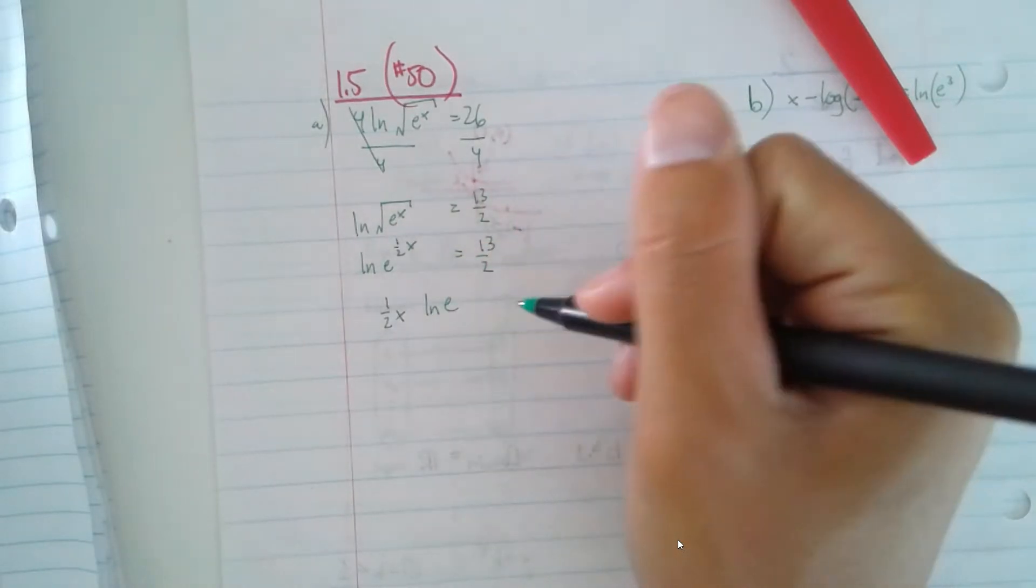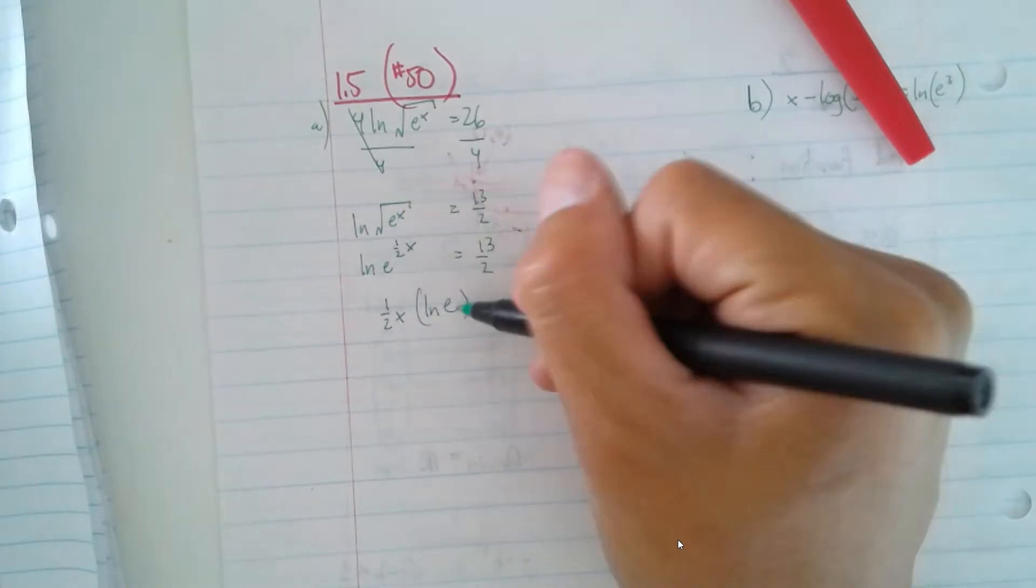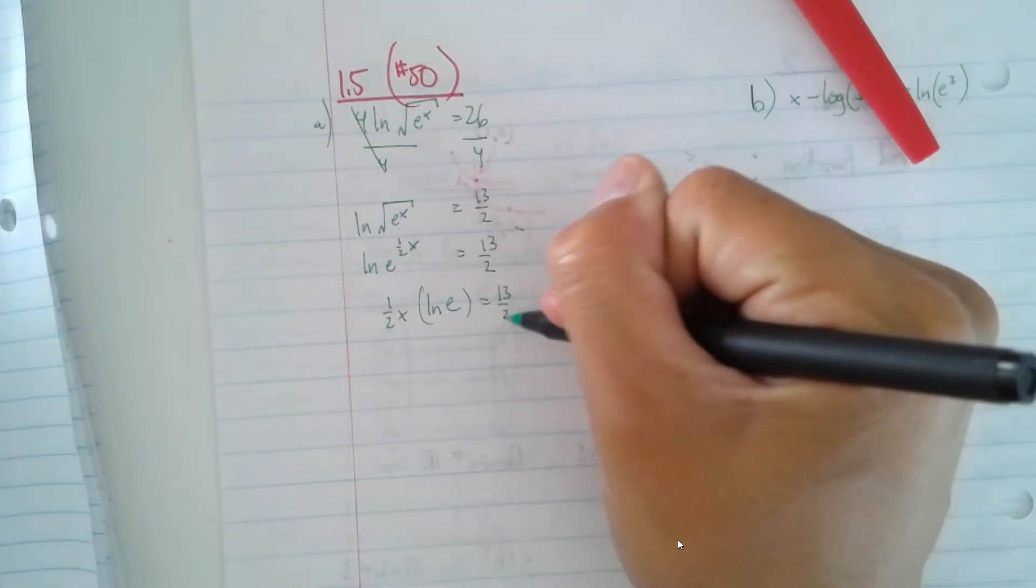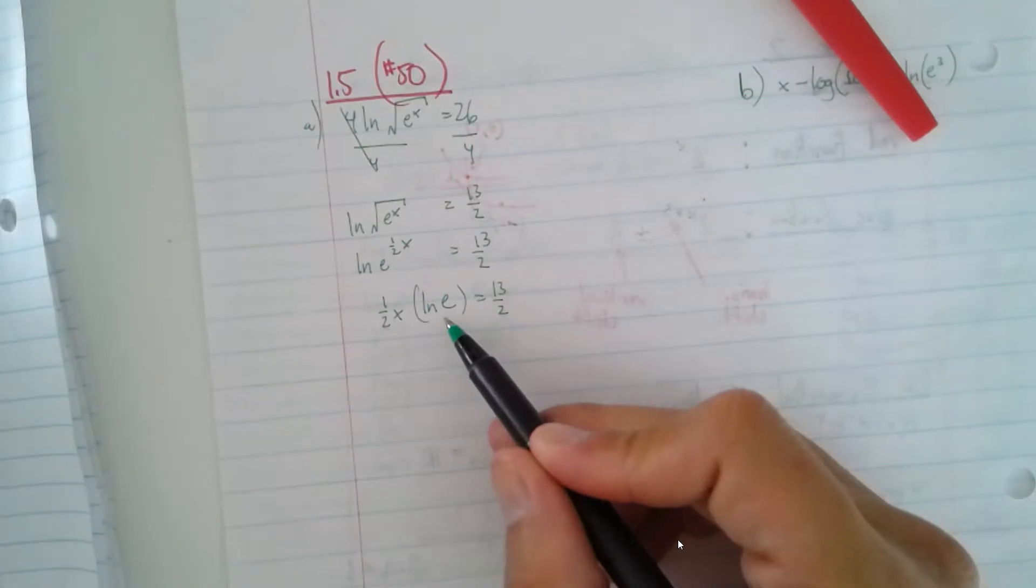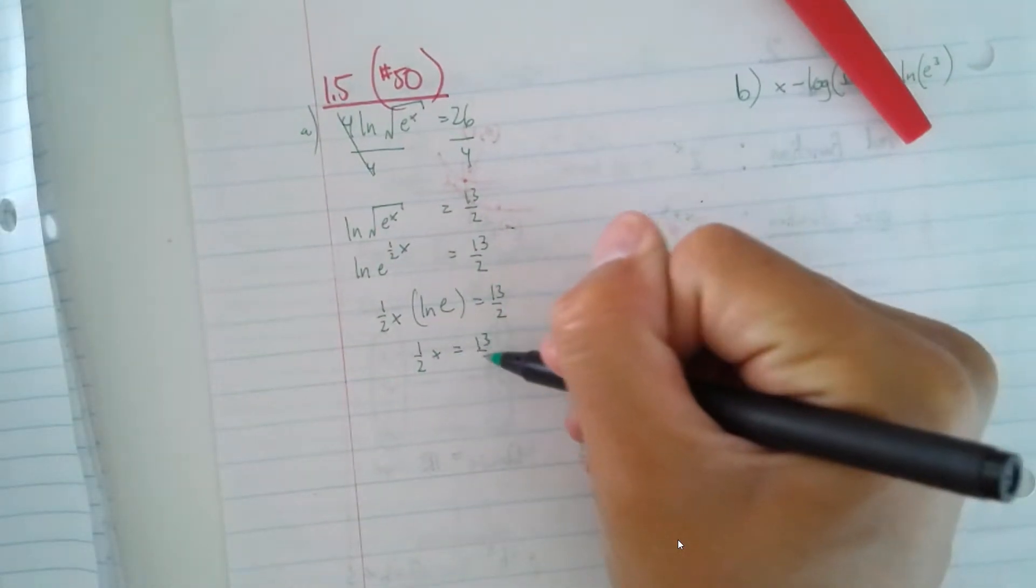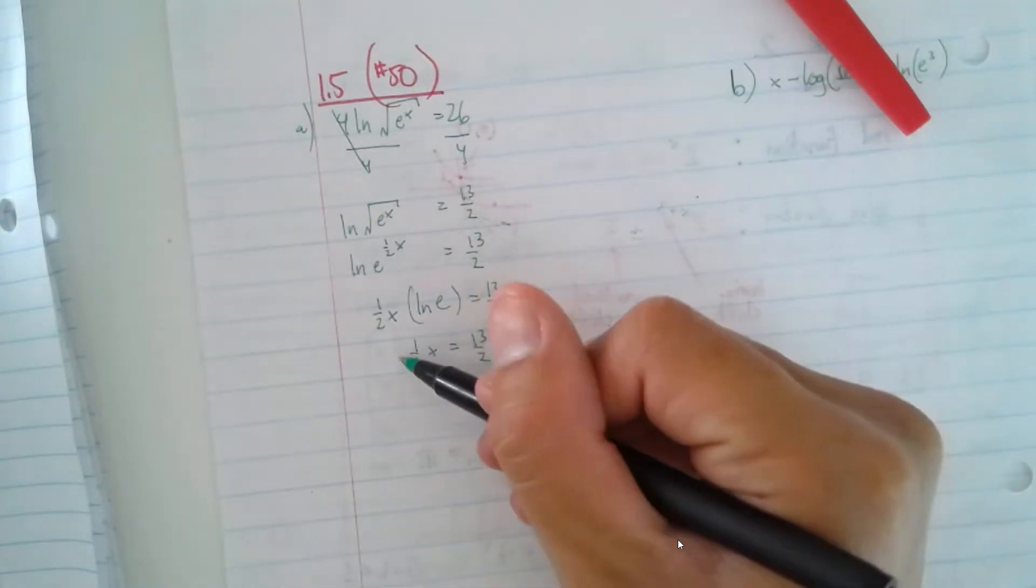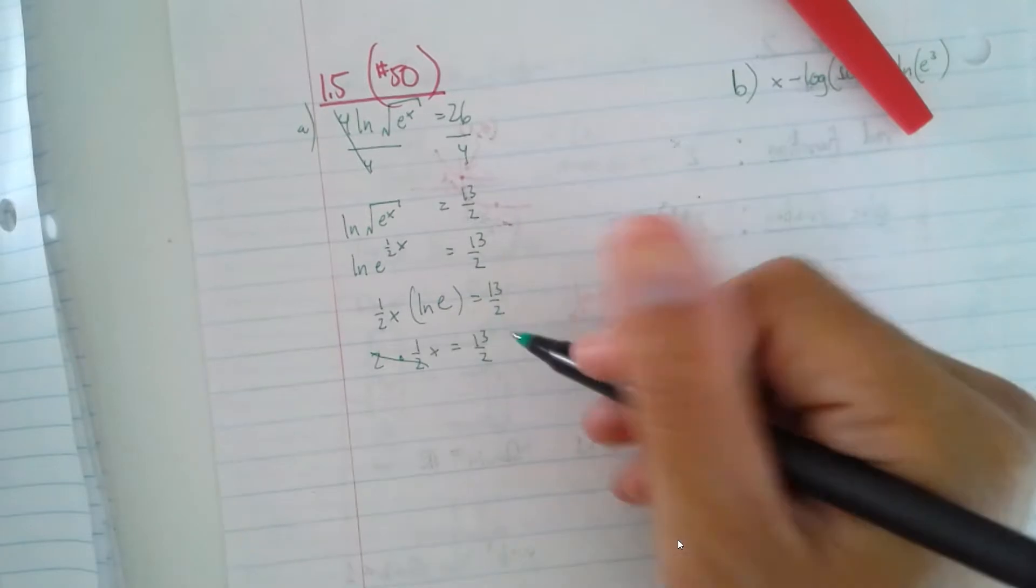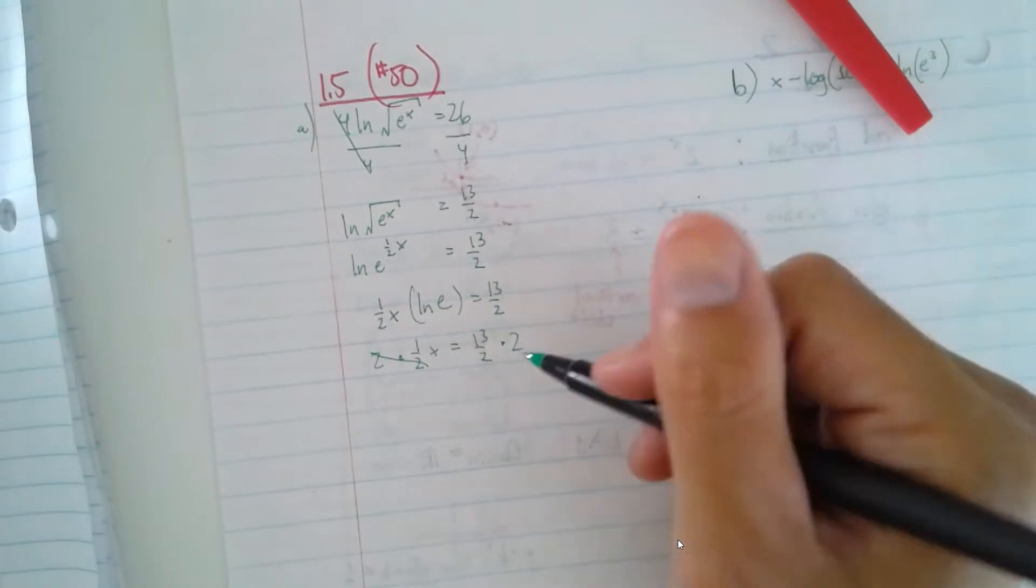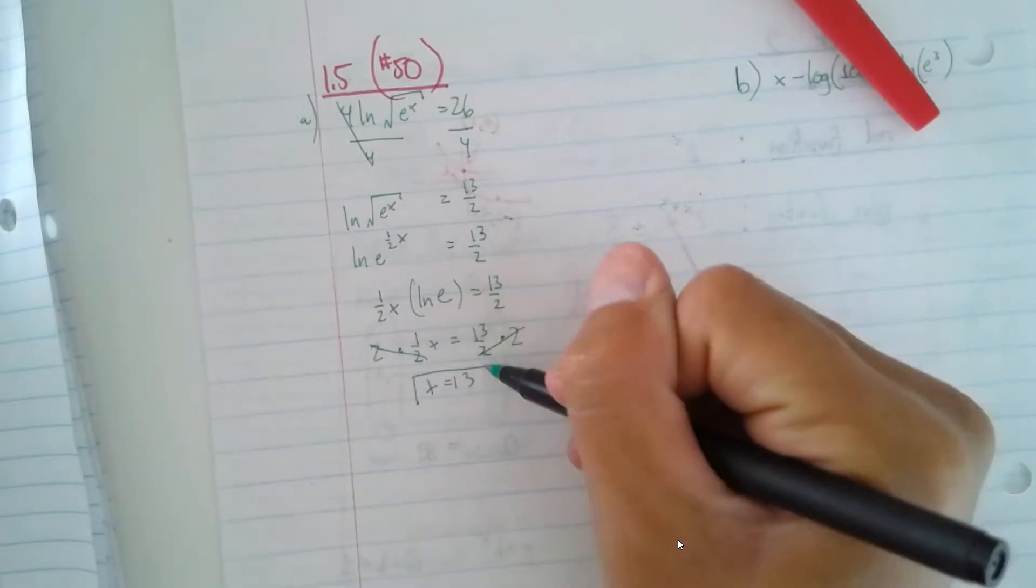And if we know anything about that, that's just going to be 1. So this is all being multiplied together equals 13 over 2. This is going to cancel out. So you're going to have 1 half x equals 13 over 2. And if you notice, if I just want to get rid of the half here, I just multiply both sides by 2. Whatever I do to one side, I've got to do the other. And there you go. x equals 13. Simple as that.